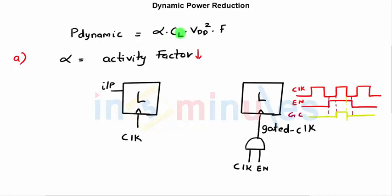Dynamic power can be reduced if we reduce any of these four terms: switching activity factor, load capacitance CL, VDD — which has a quadratic effect on dynamic power so reducing it would be a great help — or frequency. Let's understand how we can do this and whether it is possible to reduce these to a drastic extent so that we can save on dynamic power dissipation.